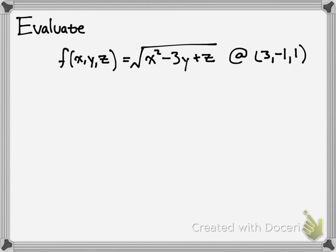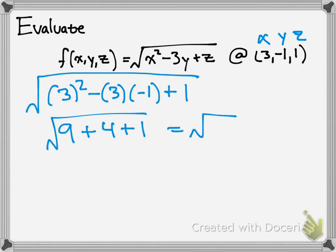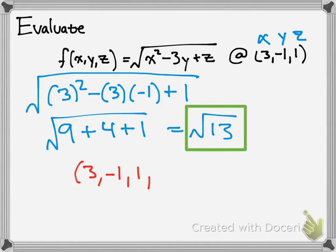Now we're going to try a fourth-dimensional function. It's kind of hard to visualize, but mathematically it's easy to solve. Whenever you see an x, you plug in 3; whenever you see a y, you plug in negative 1; and whenever you see a z, you plug in 1. So 3 squared minus 3 times negative 1 plus 1, all that is square-rooted. So 9 plus 4 plus 1 — take the square root, and that's the square root of 13. Writing the point: it would be 3, negative 1, 1, radical 13.